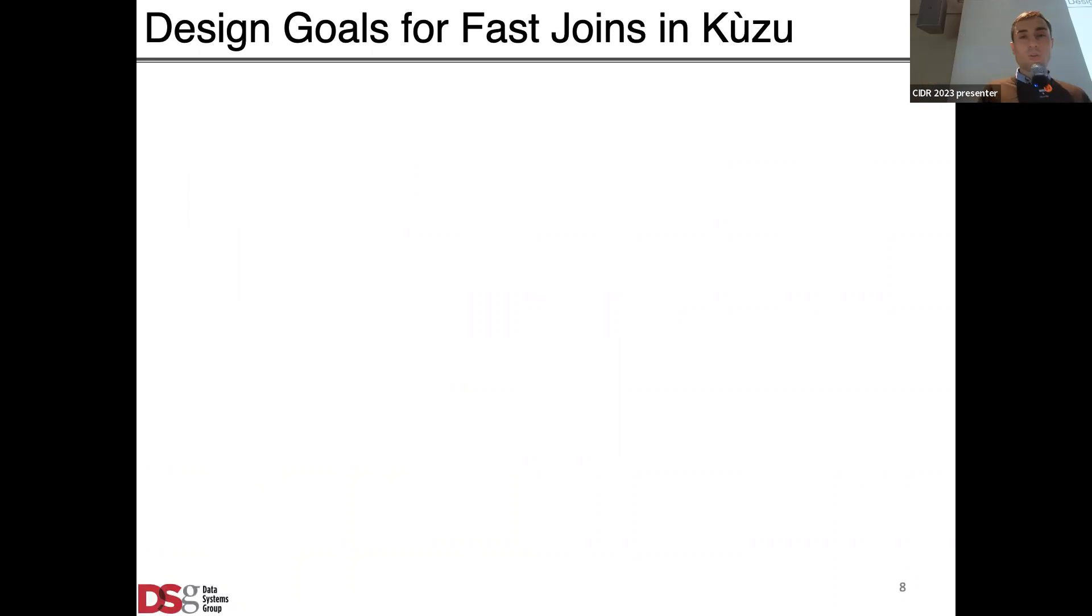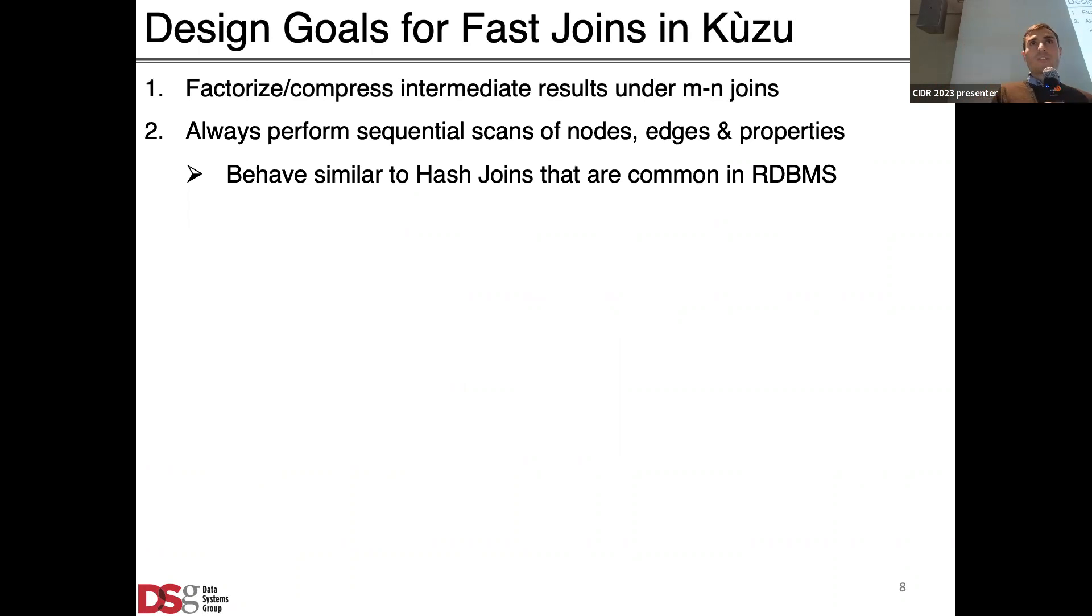Let me tell you about the join processing in Kuzu. When designing the query processor and the join operators of Kuzu we had three design goals in mind. The first is we wanted to optimize the system for many-to-many joins which by their nature are growing and we wanted to apply a particular technique called factorization to compress these results. Second is we always wanted to perform sequential scans because it's a disk based system. This might be surprising to some but this is not the common wisdom across graph database management systems which use index nested loop join type of operators which lead to non-sequential scans. We wanted to behave more similar to hash joins which are common wisdom in relational systems. We also wanted to avoid full scans of disk files when possible.